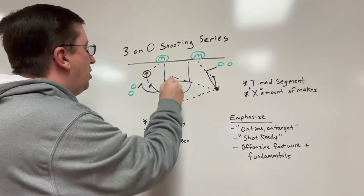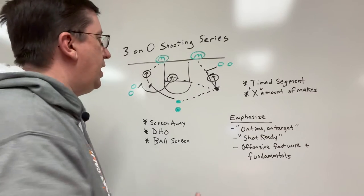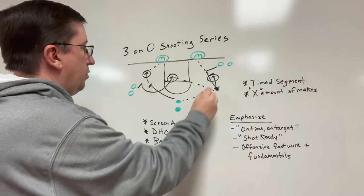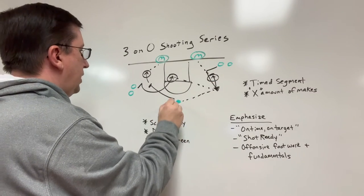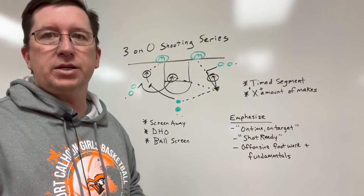So we're getting three shots on every single rep of this, and then we're rotating our lines. This group is going to go to this line, this group is going to go to this line, this player is going to go to the back of this line.